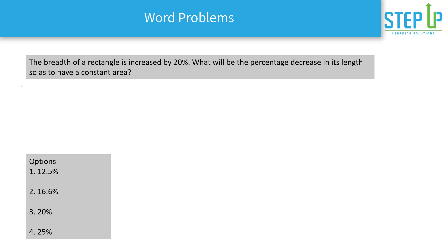The next question involves constant area. The breadth of a rectangle is increased by 20% — what will be the percentage decrease in its length so that the area remains constant? Area equals length times breadth. If the breadth increases by 20%, it becomes 1.2b. Since area must remain constant, we need to find the new length.